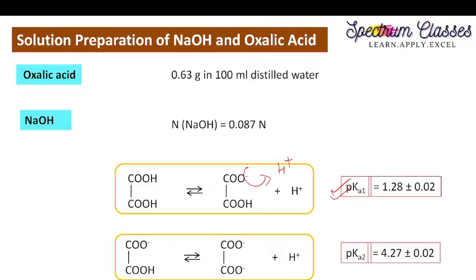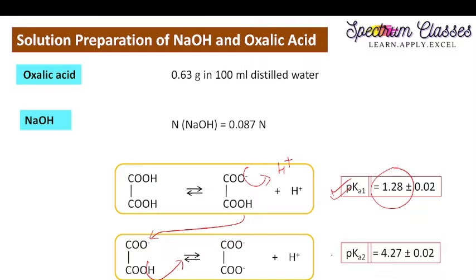The value reported for this first dissociation constant is 1.28. Similarly, in the second step, this species dissociates further — the second proton is removed — and that step is termed its second dissociation step. The pKa2 value reported in the literature is 4.27.